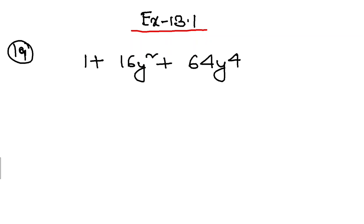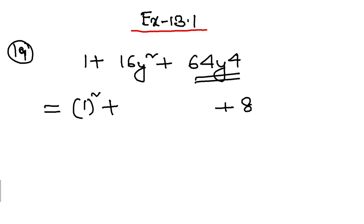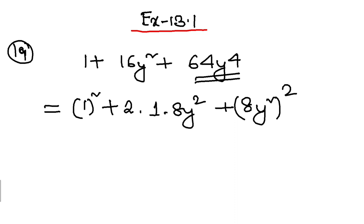Hello students, we are continuing with 13.1. It is time to do question number 19: 1 plus 16y square plus 64y to the power 4. I can write 1 as 1 square, and 64y to the power 4 can be written as 8y square whole square. The middle term is 2 into 1 into 8y square, which gives 16y square.